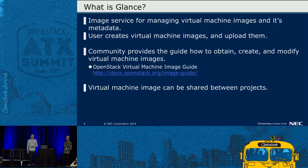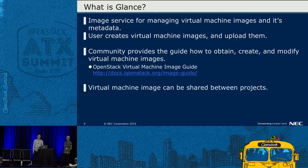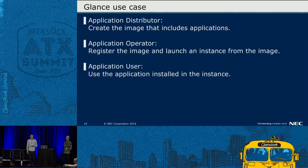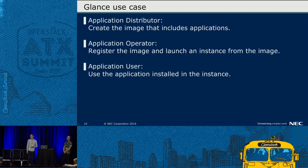Virtual machine images are usually categorized by OS first, but from the application's point of view, an application can be included in the image. So, what is Glance for the actors? Application distributor creates an image that includes applications. Application operator registers the image and launches an instance from it. Application user uses the application installed in the instance.